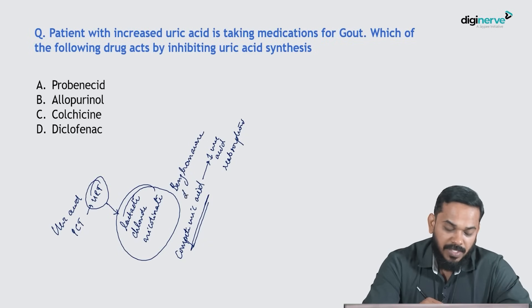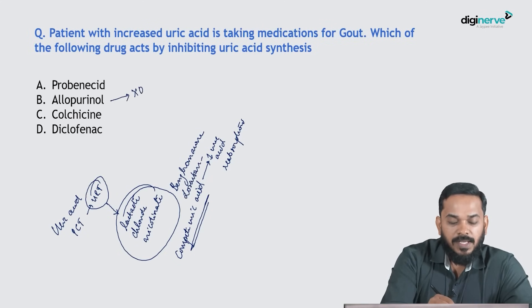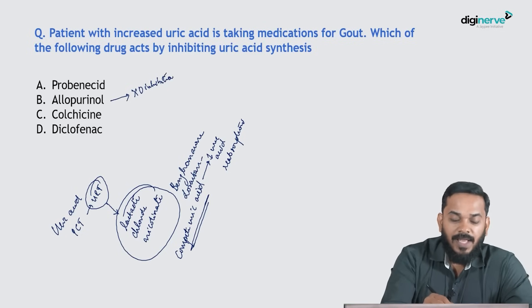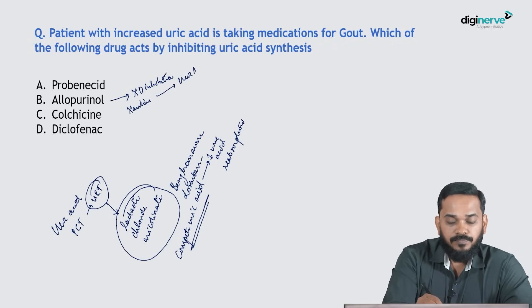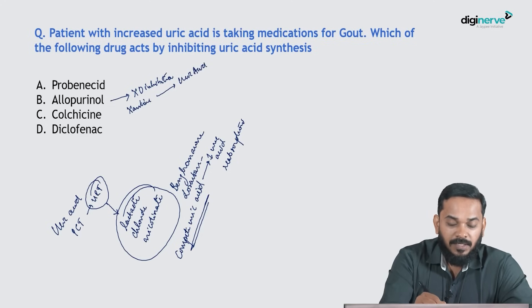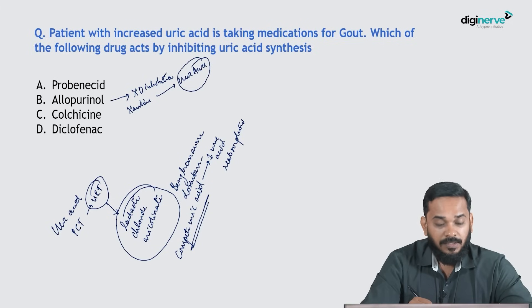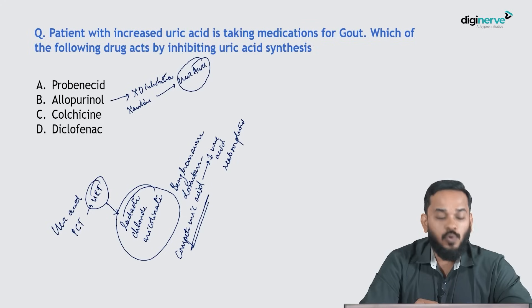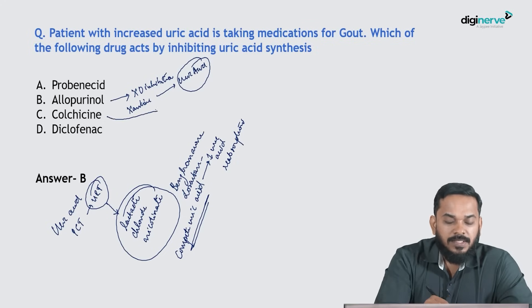And losartan also has uricosuric action. Allopurinol is a xanthine oxidase inhibitor. This enzyme catalyzes the conversion of xanthine to uric acid, so since the enzyme is inhibited, the formation of uric acid is inhibited. Therefore, allopurinol is the agent that inhibits uric acid synthesis — the answer is option B.